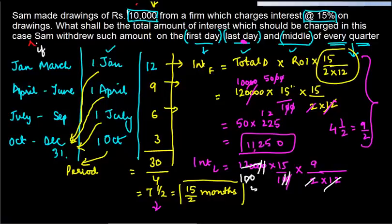Two will knock this off to give you 50, so you get 50 into 15 into 9. 15 times 50 will give you 750 into 9, which is Rs. 6,750.